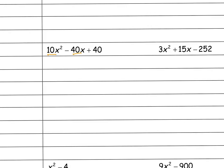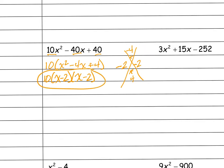So I have 10, 40, and 40. What goes into 10, 40, and 40? Well, 10 does. If I factor out a 10, I get x squared minus 4x plus 4. And then my graphic organizer says what multiplies to be 4 and adds to be negative 4. Well, I know what multiplies to be 4 is 2 and 2, but it needs to add to be negative 4, so they are both negative. So I've got 10 times x minus 2 times x minus 2.